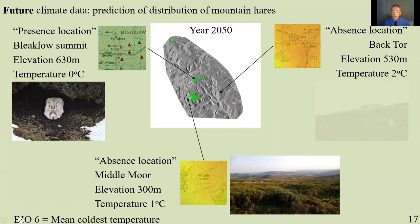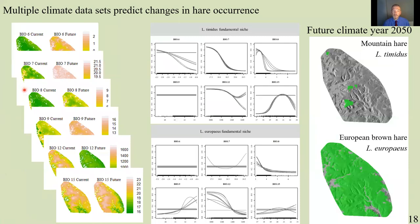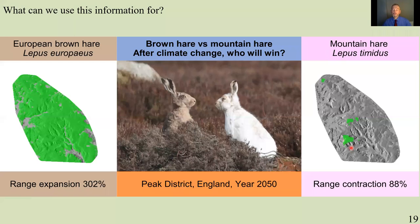To create this model we used not only Bio 6, but a number of other ways of defining the climate for different times of year — rainfall and temperature — giving us six logistic regressions for mountain hares. We also did it for brown hares, which are a sister species. They migrated from the steppes of Central Asia where it's warmer, and because of that they're physiologically adapted to warmer temperatures, meaning they're going to expand into the Peak District. So we have this conundrum: mountain hares and brown hares moving in opposite directions.